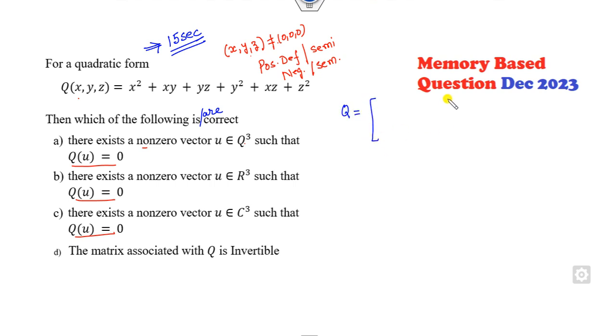I can write this into matrix form as X transpose AX where A is my quadratic form. So the diagonals are the coefficients of X square, Y square, and Z square. This is XY, so this is half of this, half YZ.